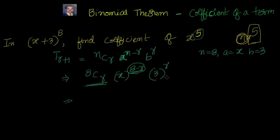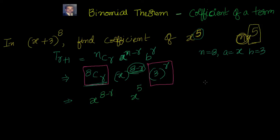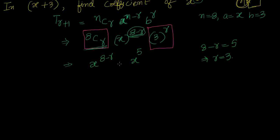We are worried about x having power 5, which means 8 minus r should equal 5. The 8Cr and 3 to the power of r are all constants once we know r. So from 8 minus r equals 5, that gives us r equals 3. Now finding the coefficient is very simple — it is 8C3 into 3 to the power of 3, that is 3 cubed.